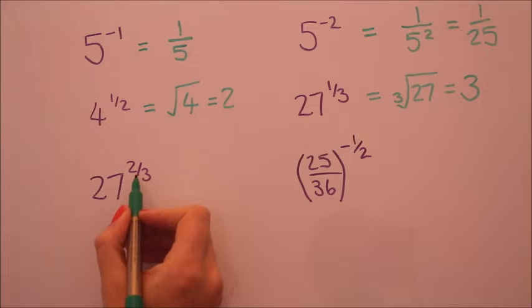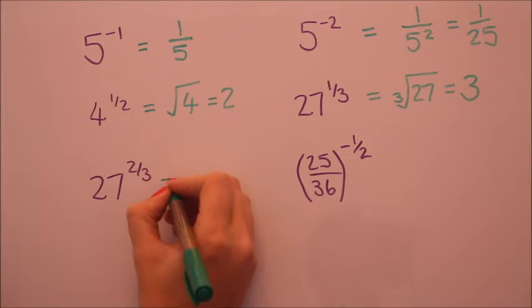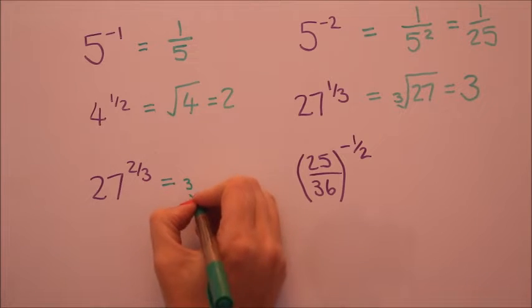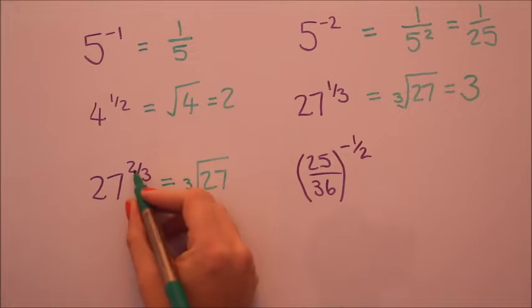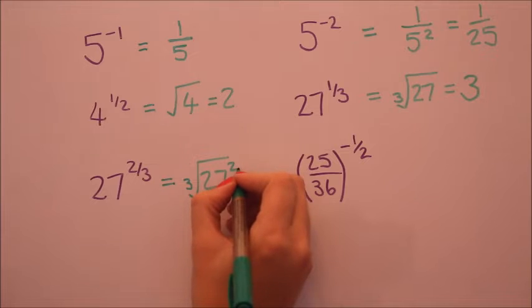Now when you have a fraction that has a number on the top that's not one, that two can actually stay with the twenty seven. So the three on the bottom is going to make it a cube root. But the two, because it's the numerator, that's going to stay there.